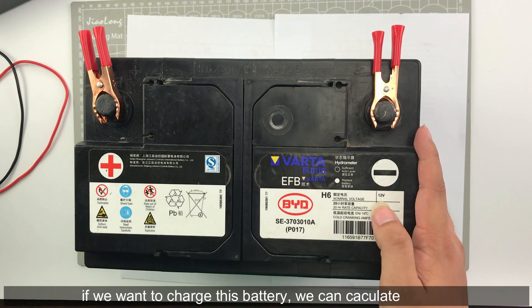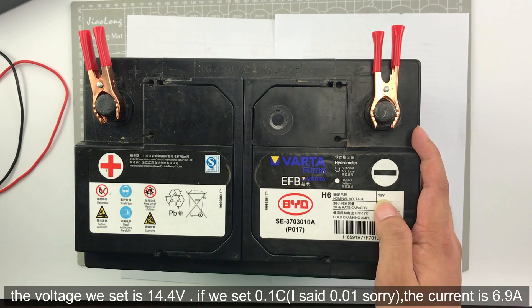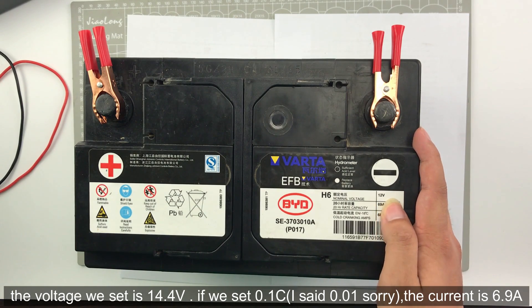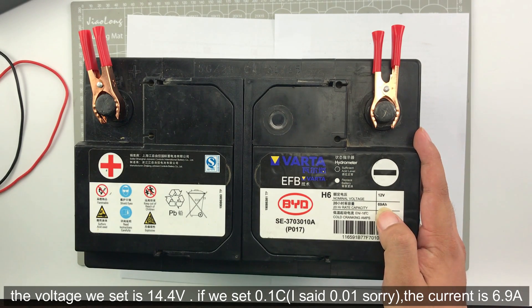If we want to charge this battery, we can calculate it. The voltage we set is 14.4 volts, and if we set 1C, the current is 6.9 amp hour.